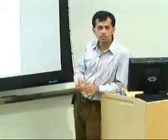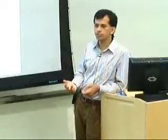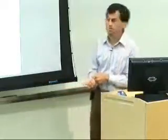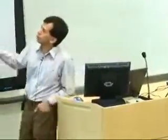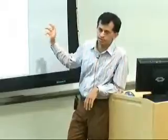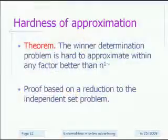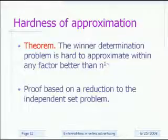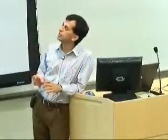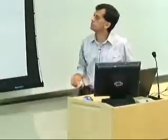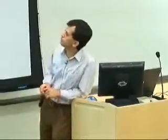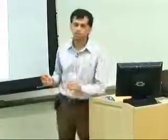On the positive side, maximum k-coverage has a simple greedy algorithm achieving a constant approximation and works well in practice. So we hoped for a similar approach here. However, we eventually proved a strong hardness of approximation result: the winner determination problem is hard to approximate within any factor better than n^(1-ε). The proof is based on a reduction from the independent set problem.